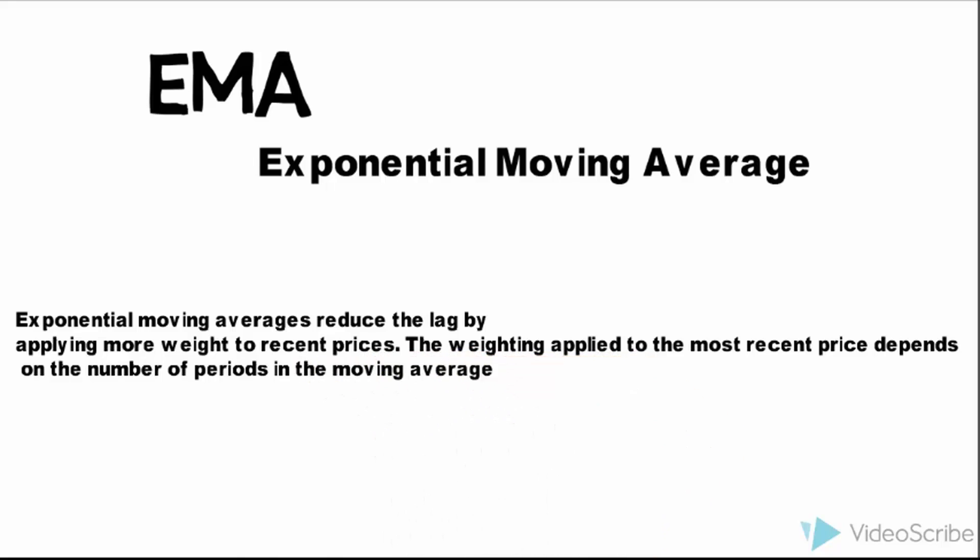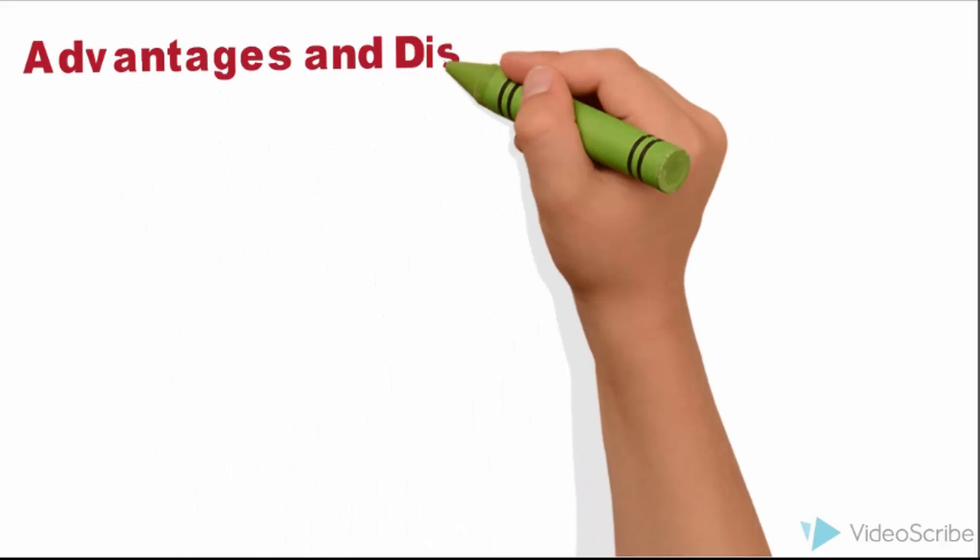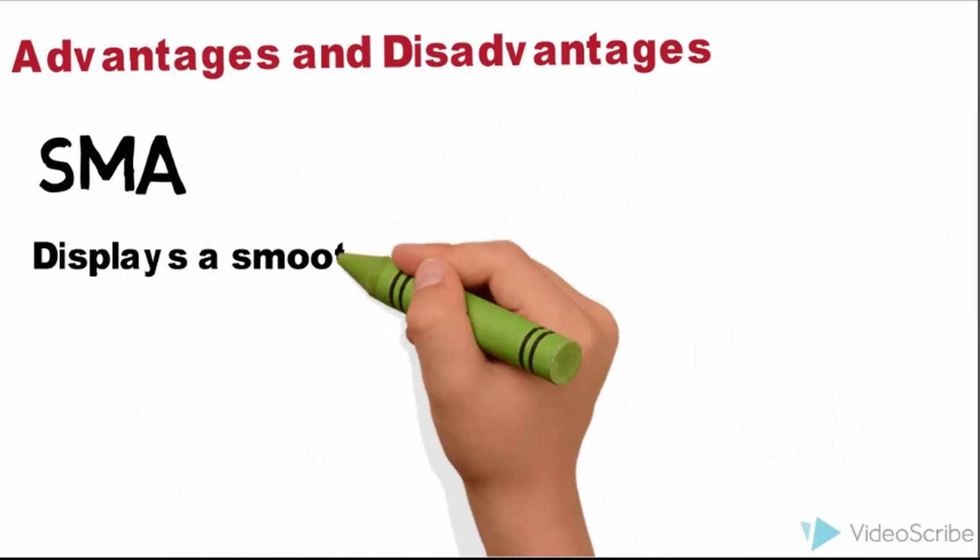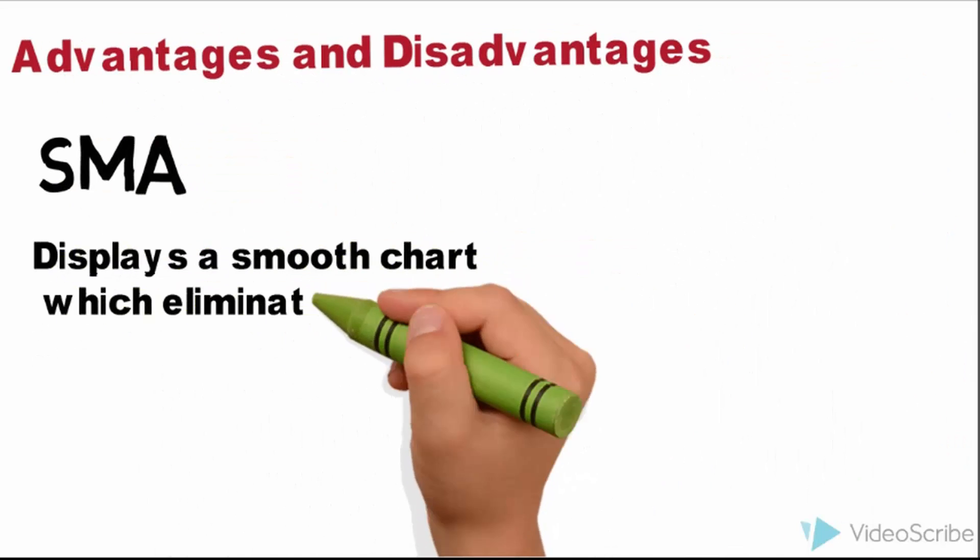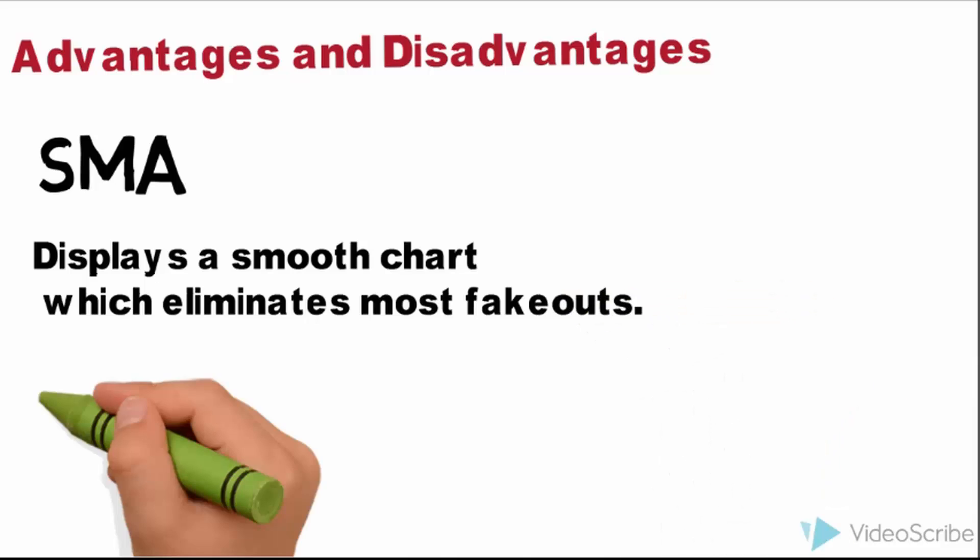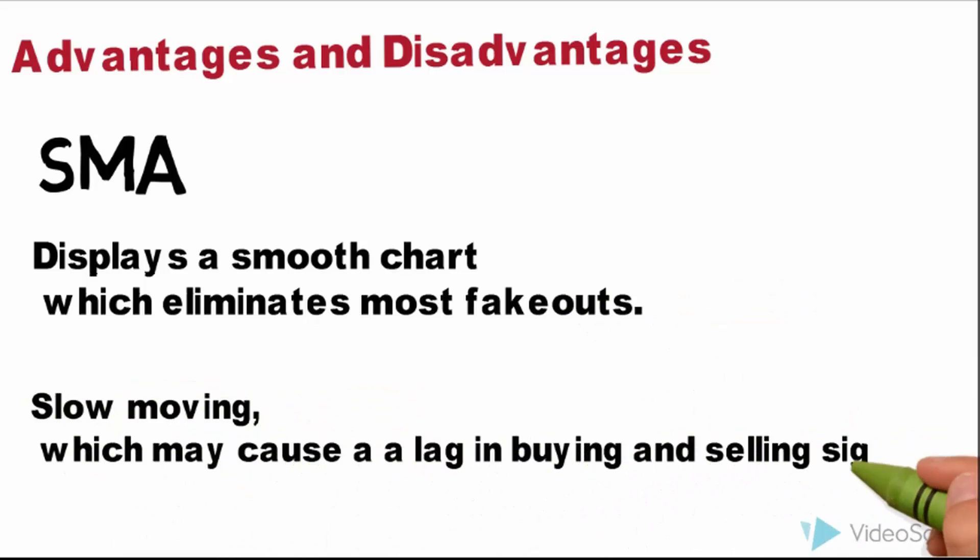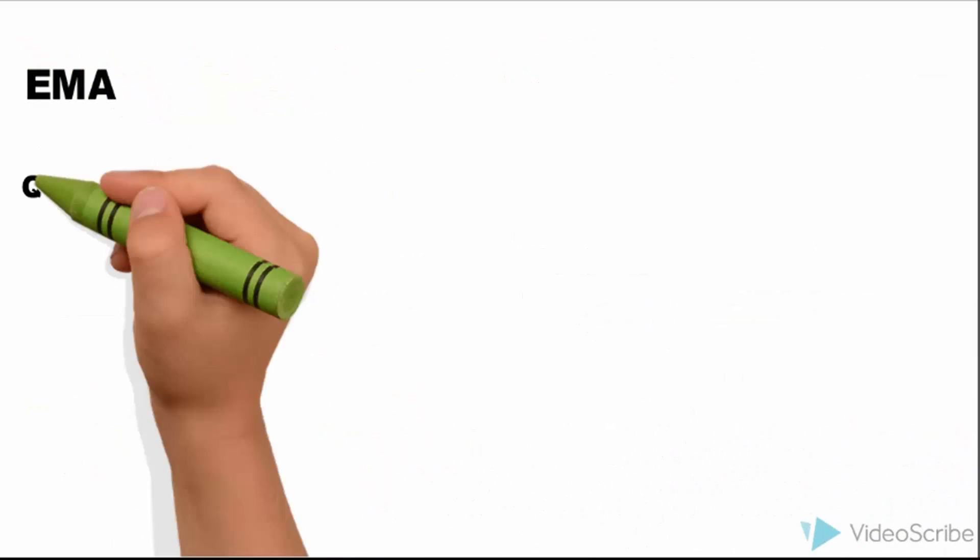What are the advantages and disadvantages? Let's start with SMA. SMA displays a smooth chart which eliminates most fakeouts. Disadvantage is slow moving, which may cause lagging in buying and selling.